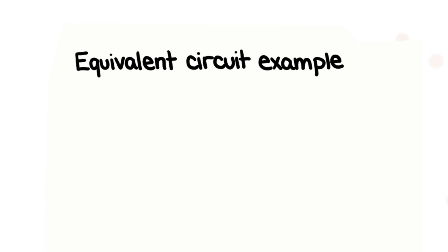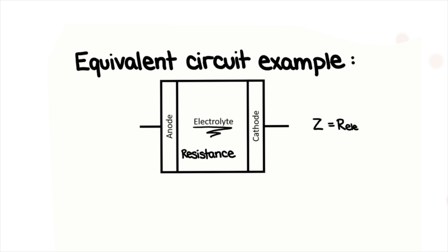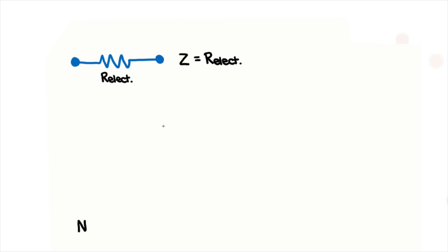Let's look at a very simple example of equivalent circuit fitting. Imagine that we could design an electrochemical cell whose only impedance is the electrolyte resistance. In that case, the potential current behavior can be modeled very simply using Ohm's law.